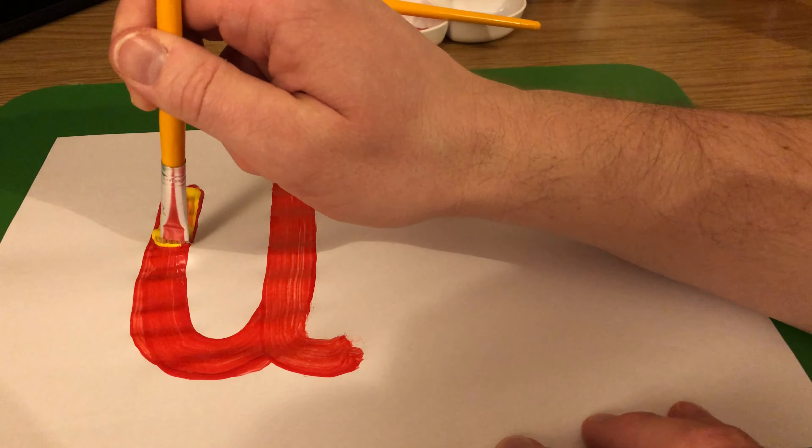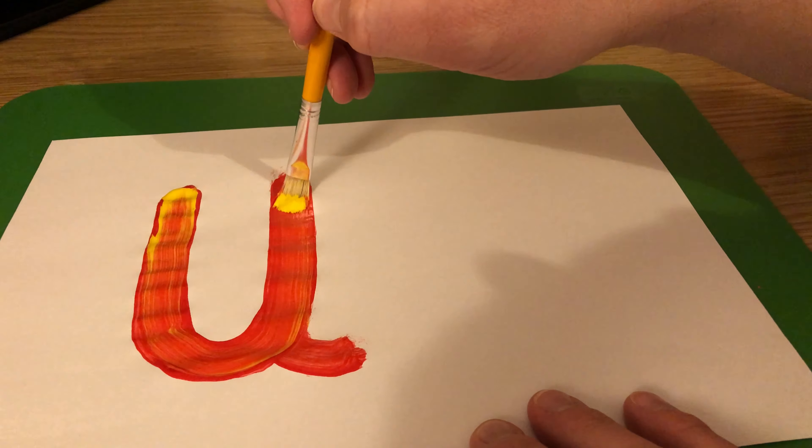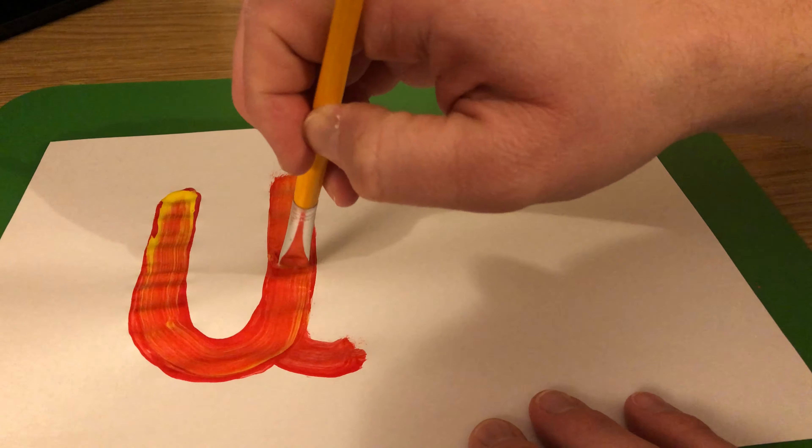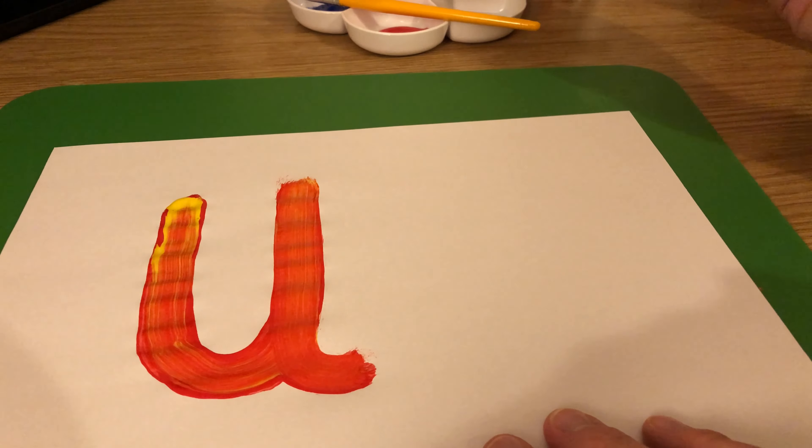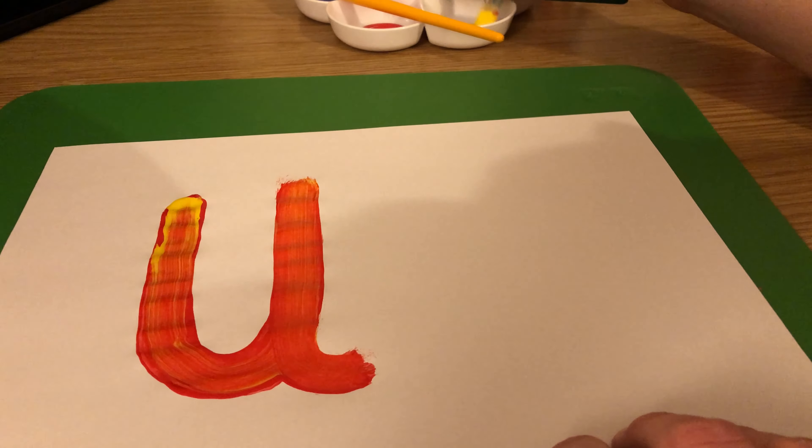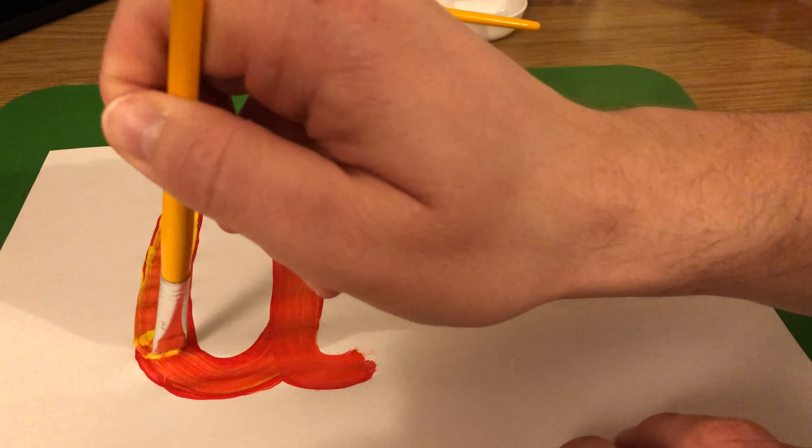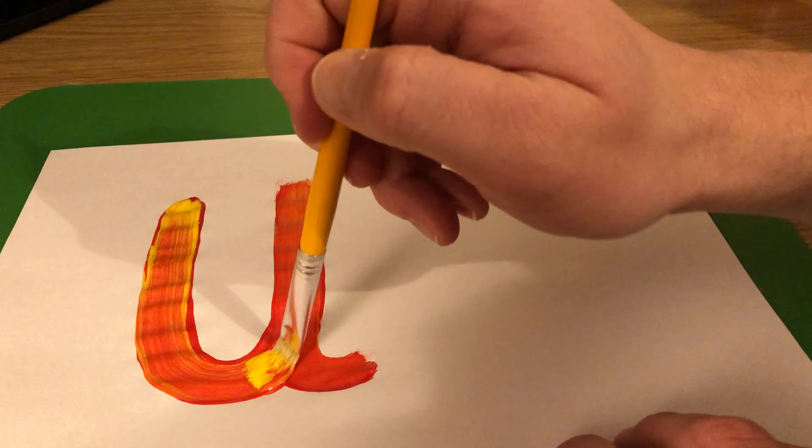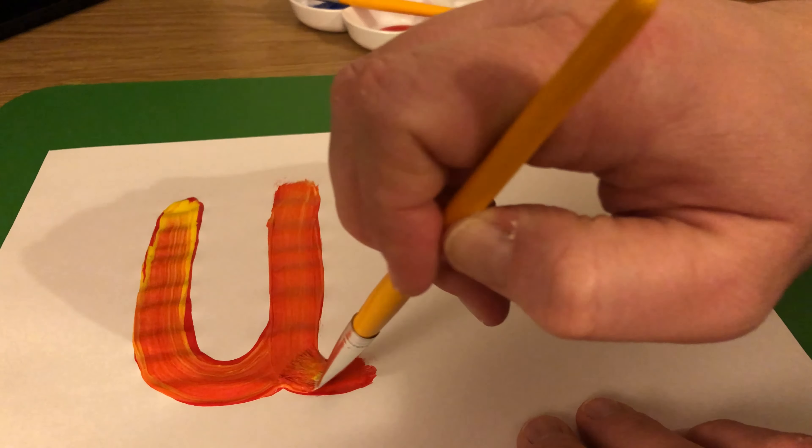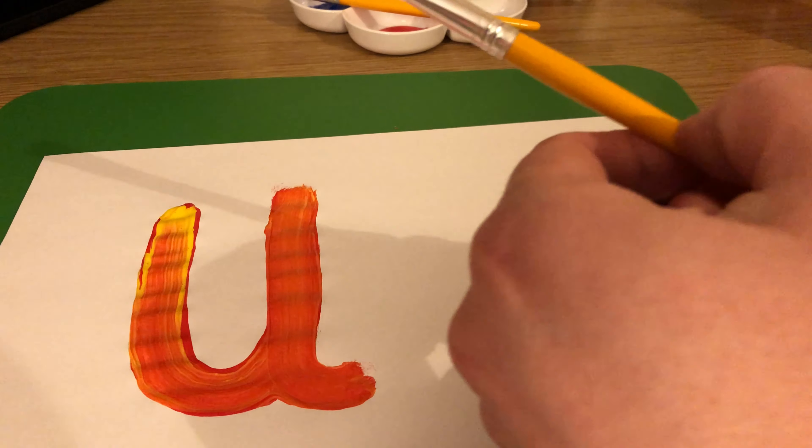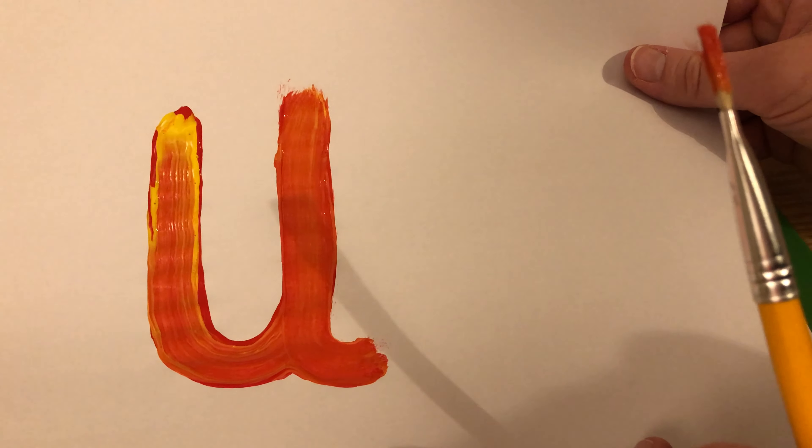Start at the top, come all the way down, curve, go straight back up, straight back down and flick. Can you see it slightly change in color? I'm going to get some more yellow again. So I'm going to start at the top, come all the way down, curve, straight up, straight back down and flick. See, it's got more of an orange color. Because red and yellow make orange.